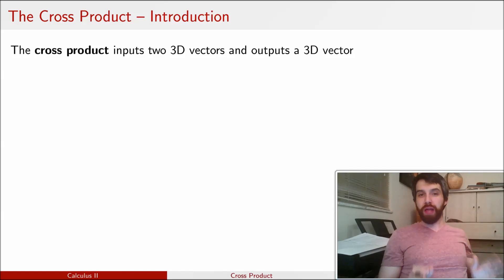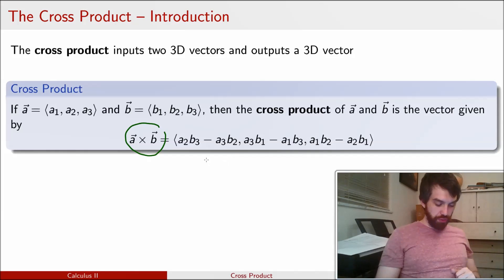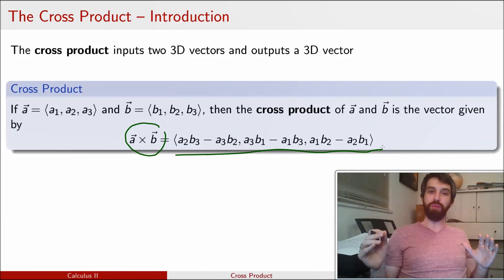Now, the algebraic definition of the cross product is this, that a cross b is equal to this big, long, messy thing. And the main thing I want you to take away at this particular stage is that I've got the triangle brackets and a couple of different commas there to indicate that this thing that I have is a vector, it's got three different components. And if my vectors a and b both have three different components, it has to be three, it can't be two, it can't be four, it has to be three.